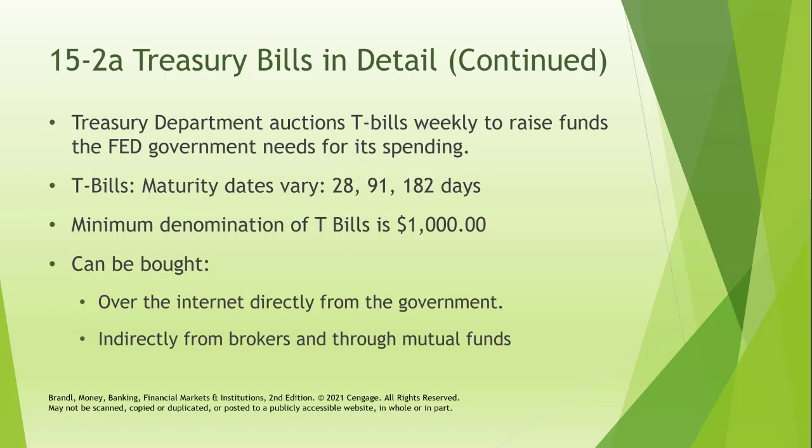There are T-bills with 9, 10, 11, and 12 months to maturity because some older bonds effectively become T-bills as they head toward their maturity date. These T-bills have a minimum denomination of a million dollars and can be bought over the internet directly from the government or indirectly through brokers and mutual funds.